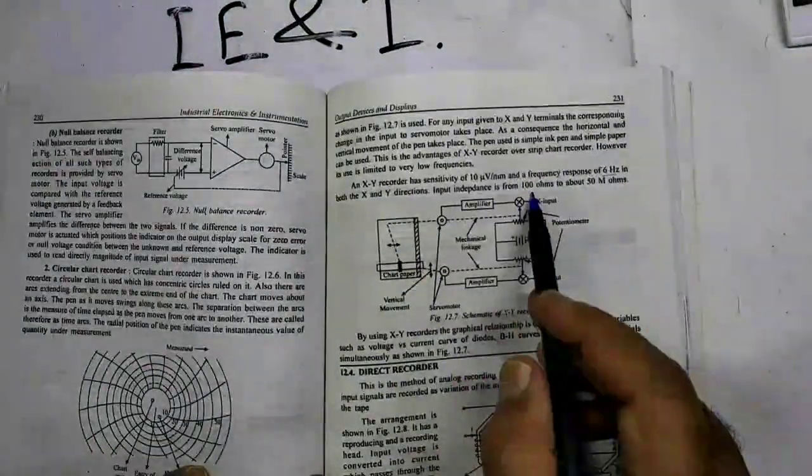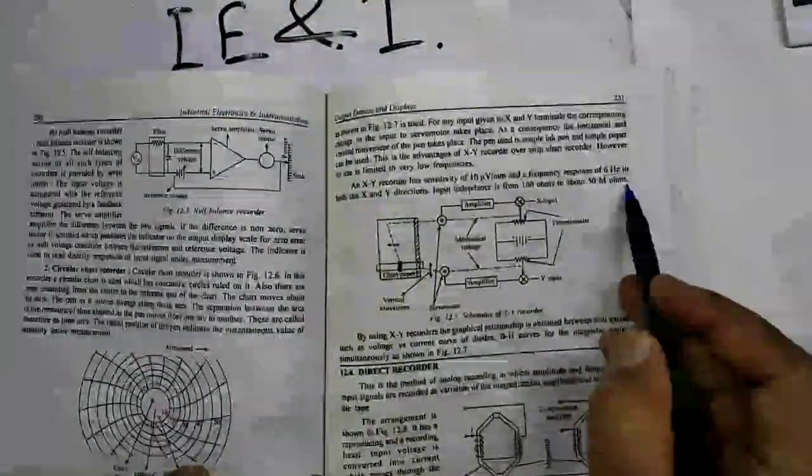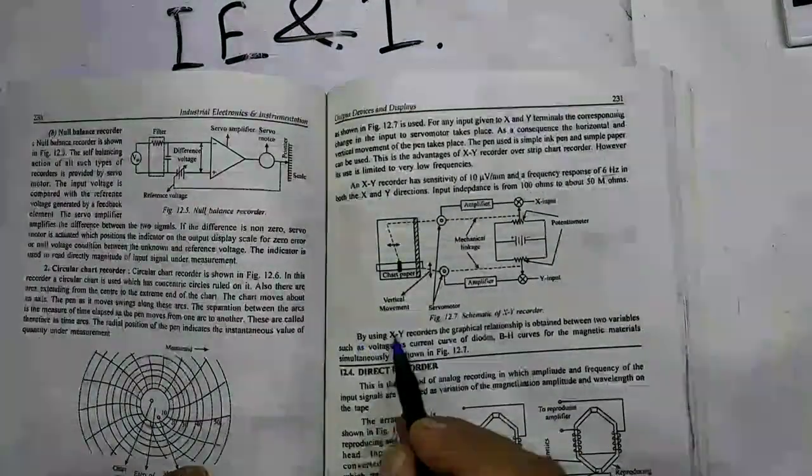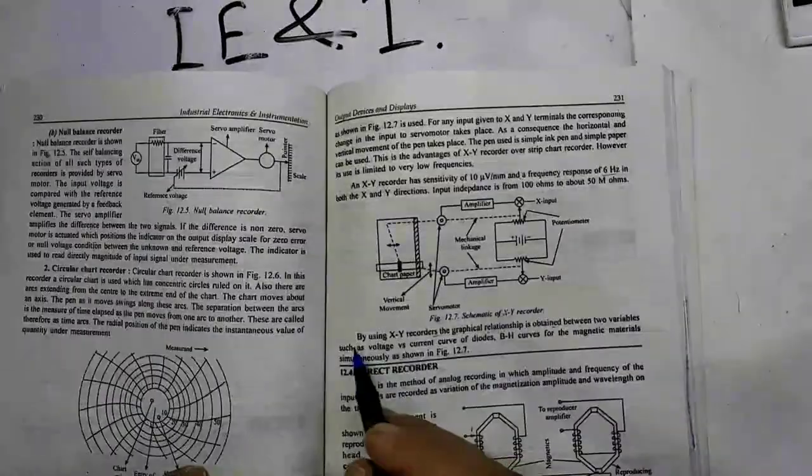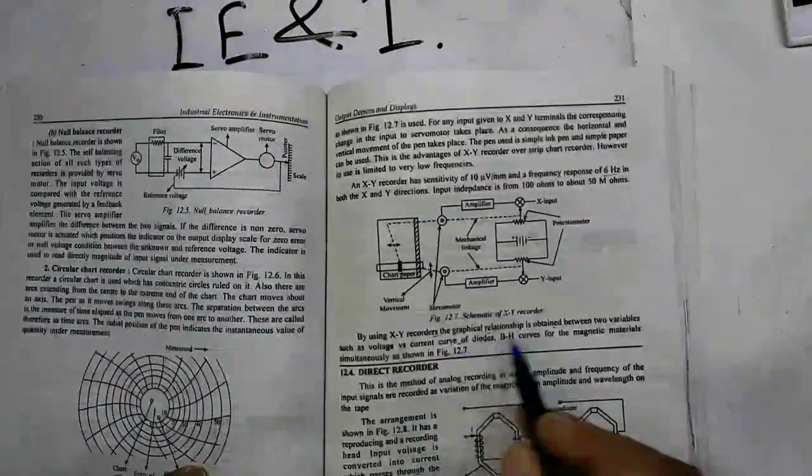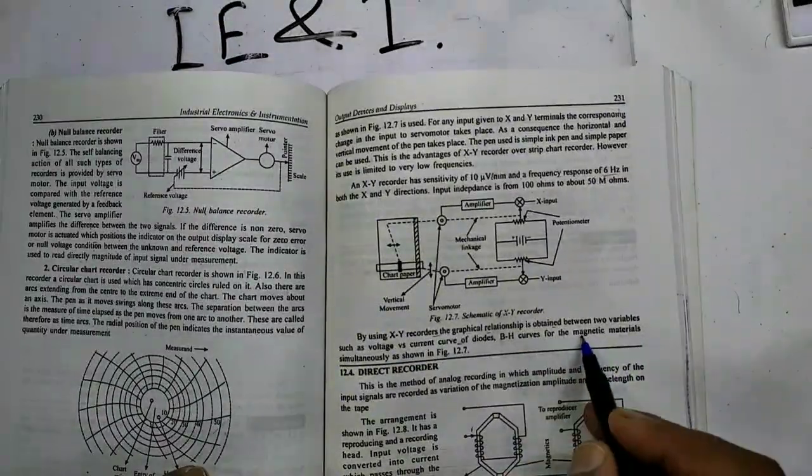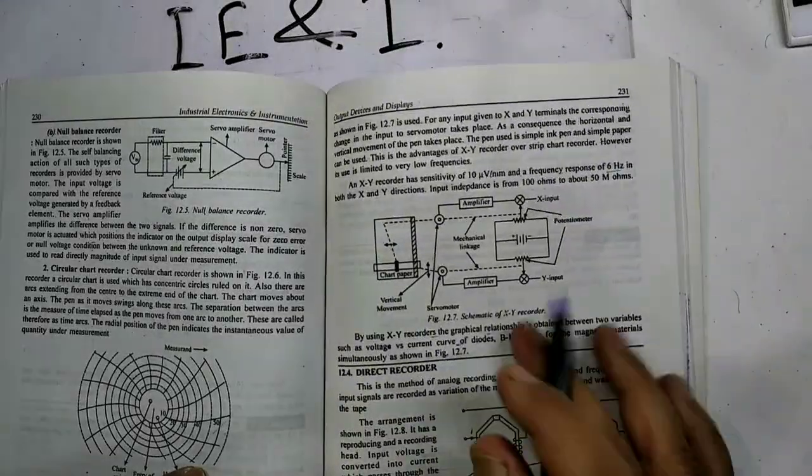Input impedance is from 100 ohms to about 50 megaohms. By using XY recorders, the graphical relationship is obtained between two variables such as voltage versus current curve of diode, BH curve of magnetic material simultaneously.